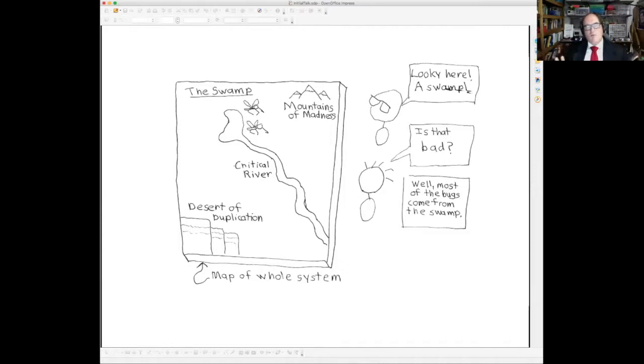So in this case, what Rob found were some troubling things, what we might call the mountains of madness, the desert of duplication. And by the way, Rob hates code duplication, but there was a lot of code duplication in this system. And there was a critical river of functionality, but most importantly, there was a swamp.